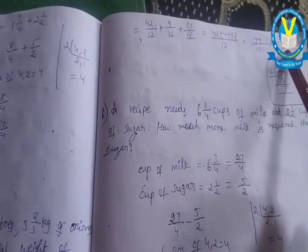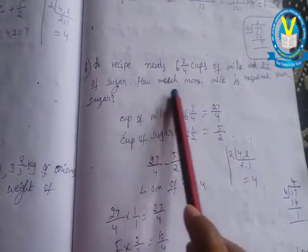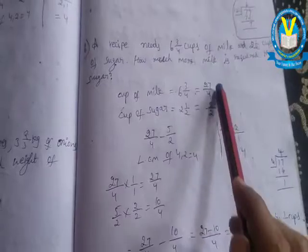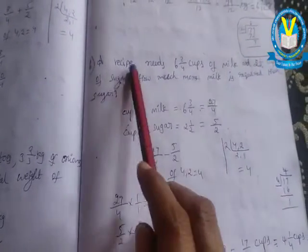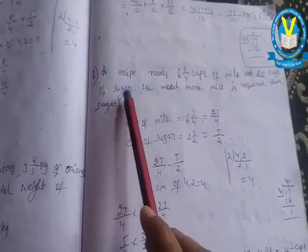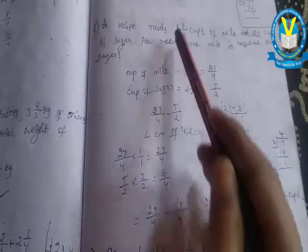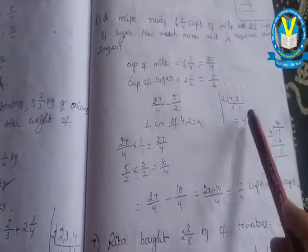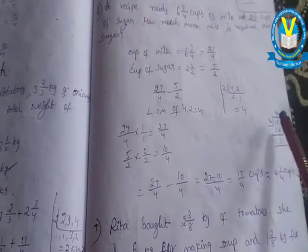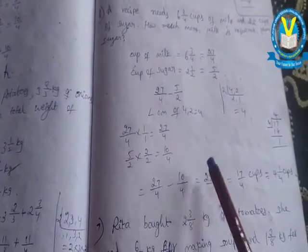Next, sixth one. A recipe needs six and three-fourths cups of milk and two and one-half cups of sugar. How much more milk is required than sugar? Cups of milk, cups of sugar - change mixed into improper, then subtract. After calculation, the answer is four and one-fourth cups.